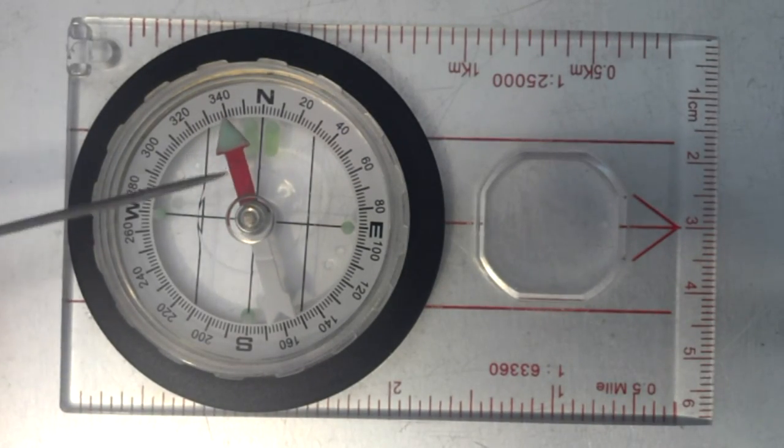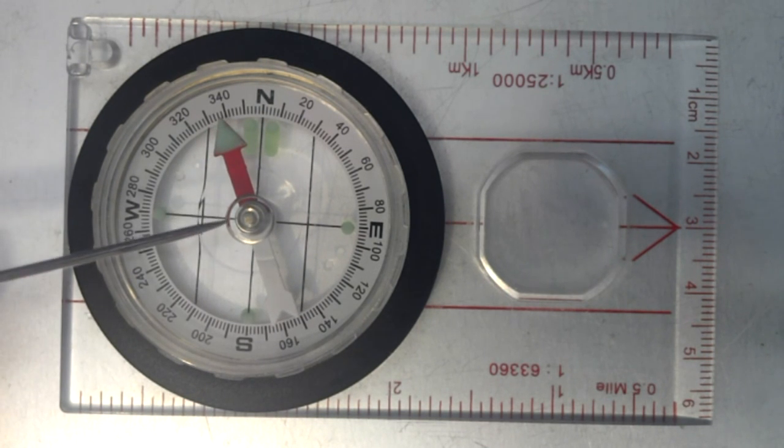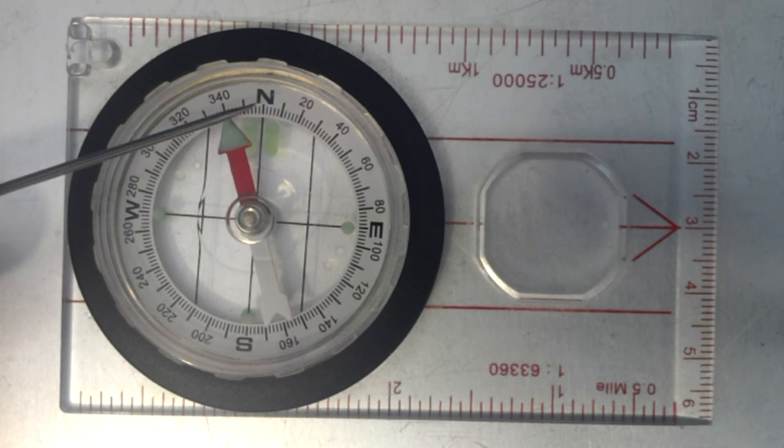You see this red and white arrow? It's called a compass needle. In some compasses it may be red and black, but in this instance it's white. The point is, the red part is always pointing towards Earth's magnetic north pole. That's basically all you need to know - it's as simple as that.